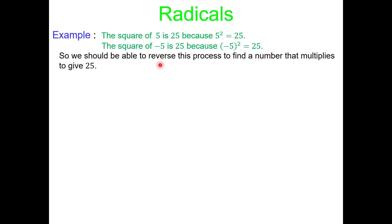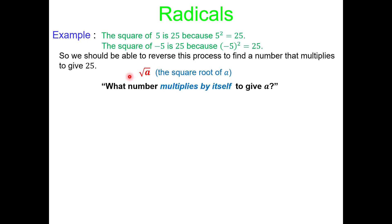So we should be able to reverse this process to find a number that multiplies to give 25, and that's where radicals come in. If I start with 25 and I want to know what number squared gives me 25, what symbol do I use? It's the square root symbol. You would read this as 'square root of a,' and it translates to: what number multiplies times itself to give you the number a?